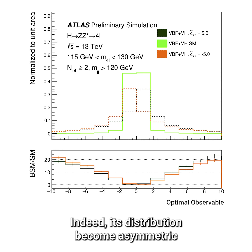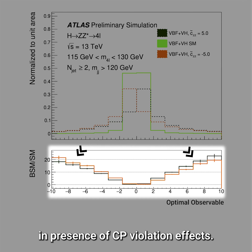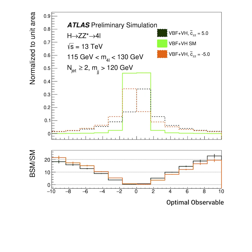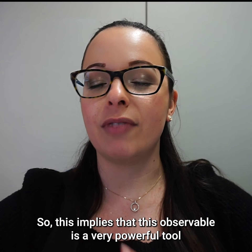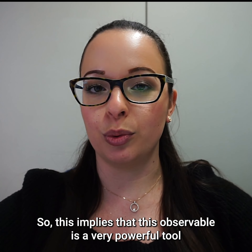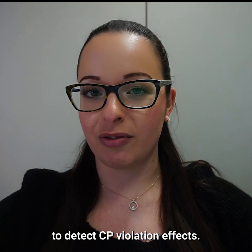Indeed, its distribution becomes asymmetric in the presence of CP violation effects. This implies that this observable is a very powerful tool to detect CP violation.